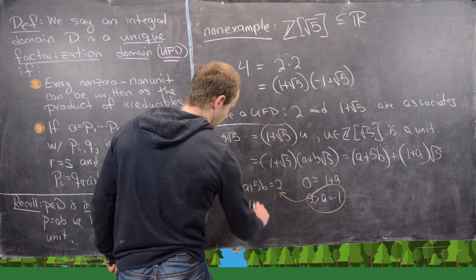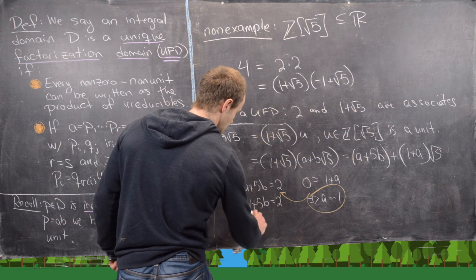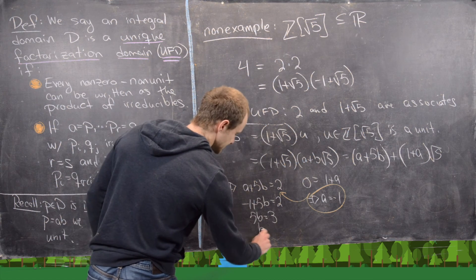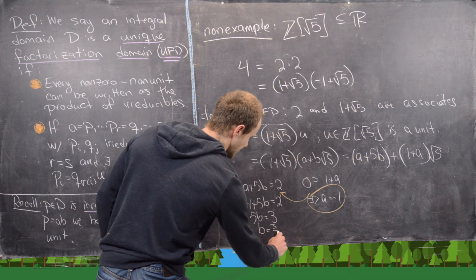Which tells us that 5B equals 3, which tells us that B equals 3 over 5.